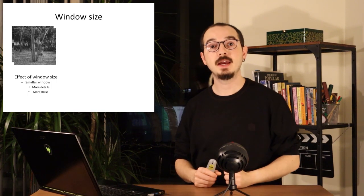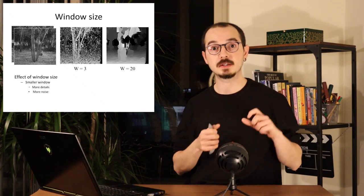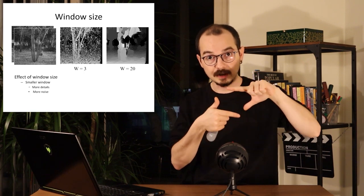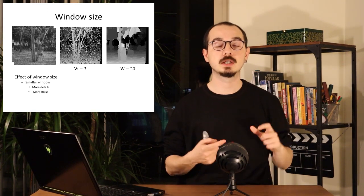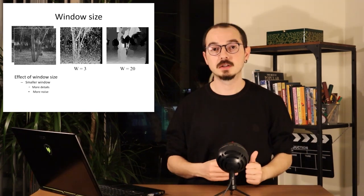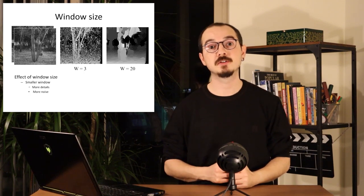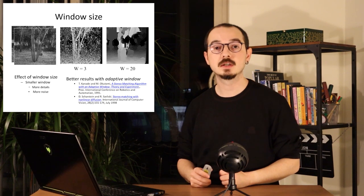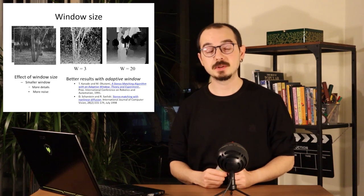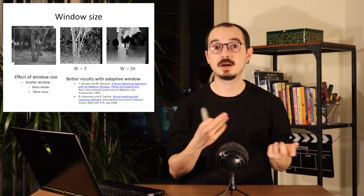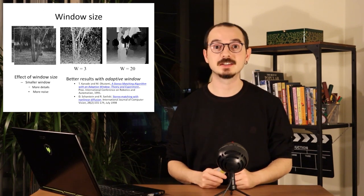We can change the window size, which changes the behavior of our algorithm. A smaller window gives more detail because we're looking very closely, but it also produces quite a bit of noise since using few pixels for matching can give unreliable SSD results. A larger window loses some detail but is less noisy overall. We can also use an adaptive window that automatically determines the best window size for a particular region, and you can check out the referenced papers to see how this is done in practice.